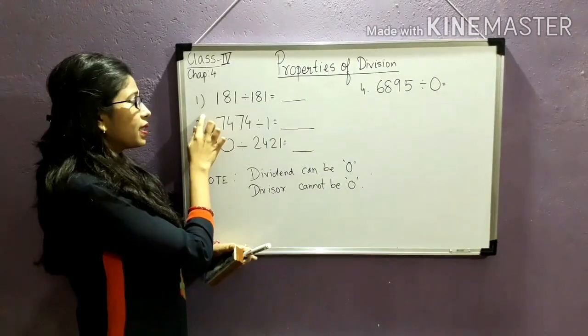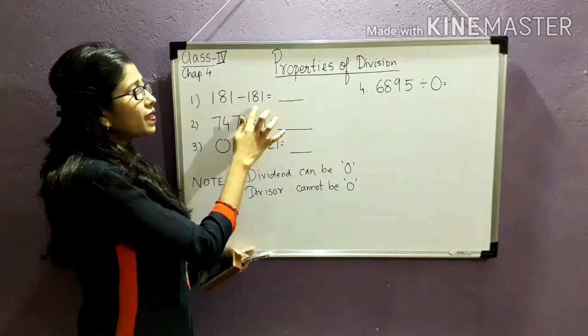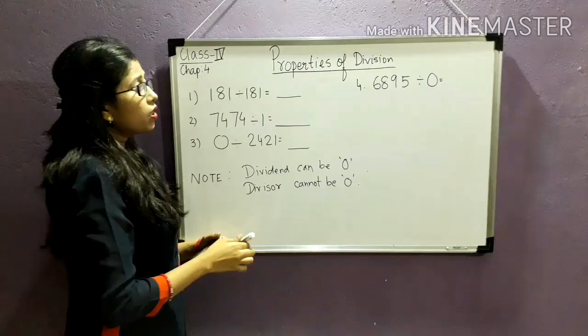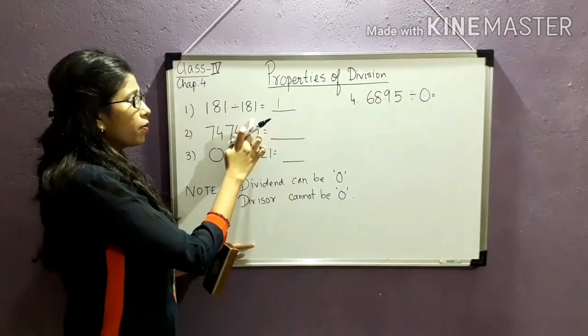The first property says that if I divide 181 with the same number or same divisor, the answer will be 1. Here the dividend and the divisor are the same, so my quotient will be 1.